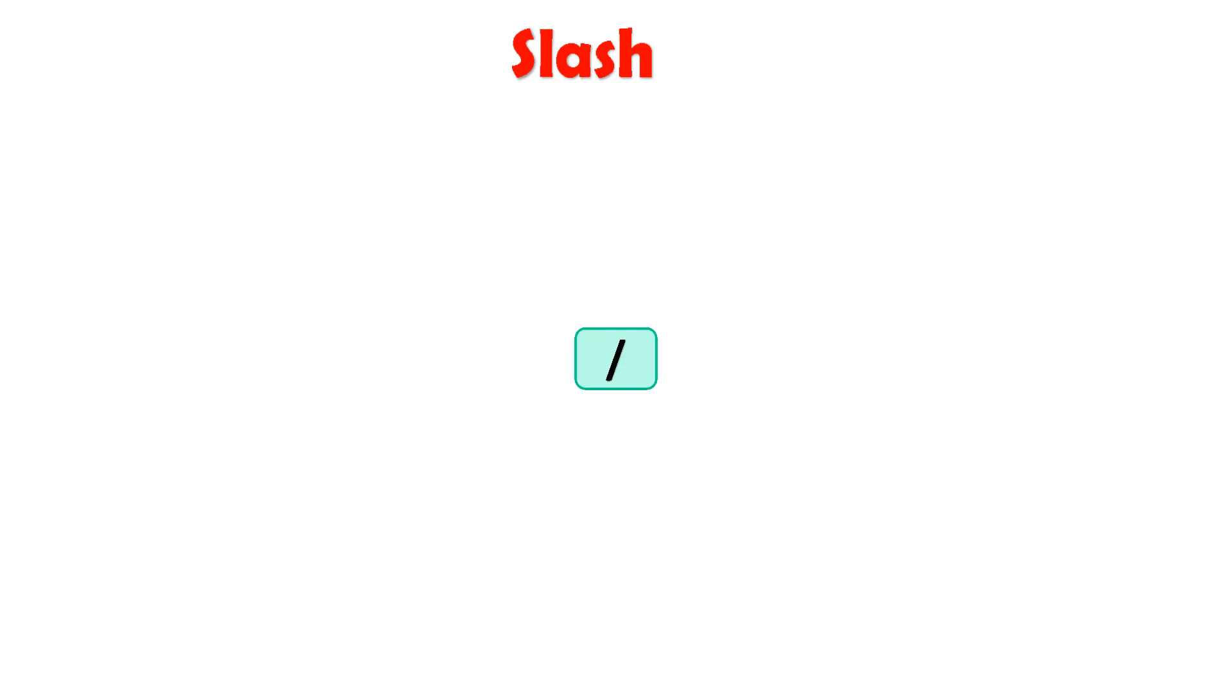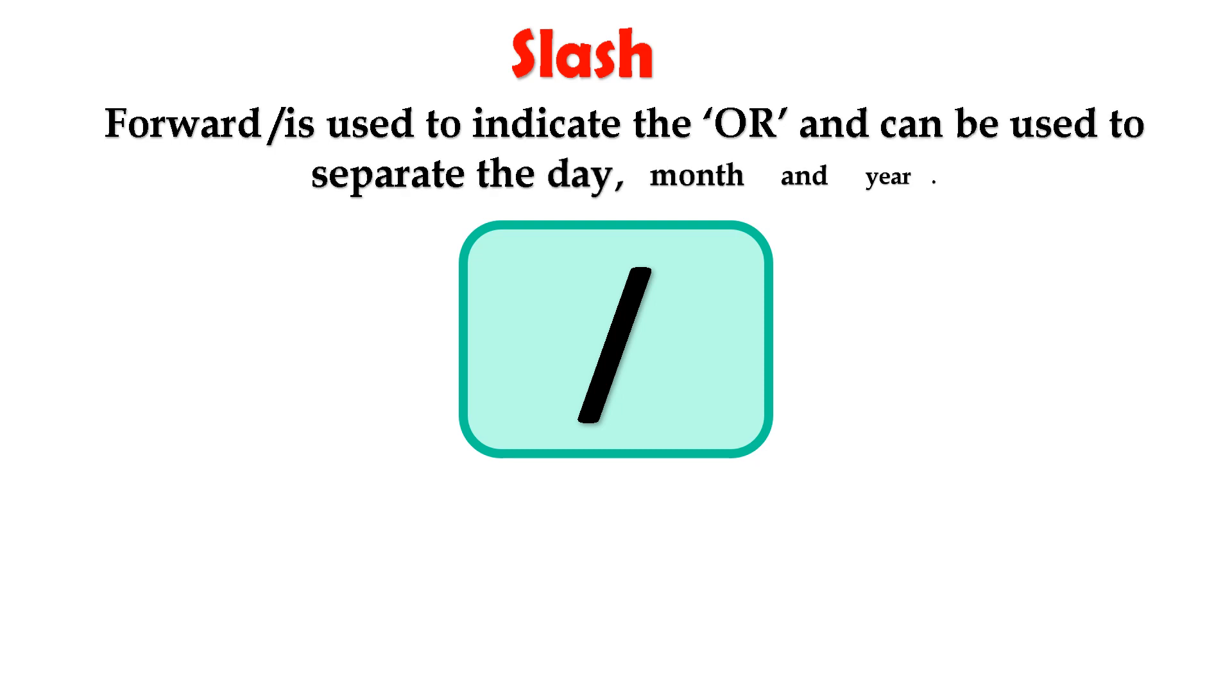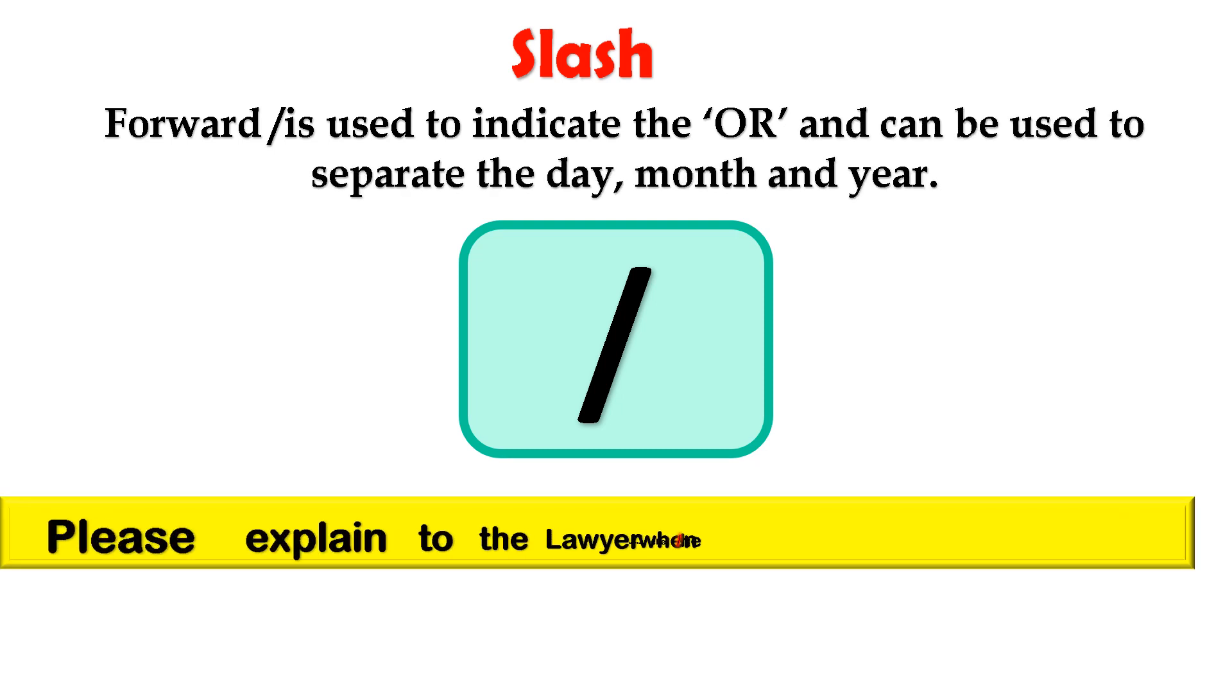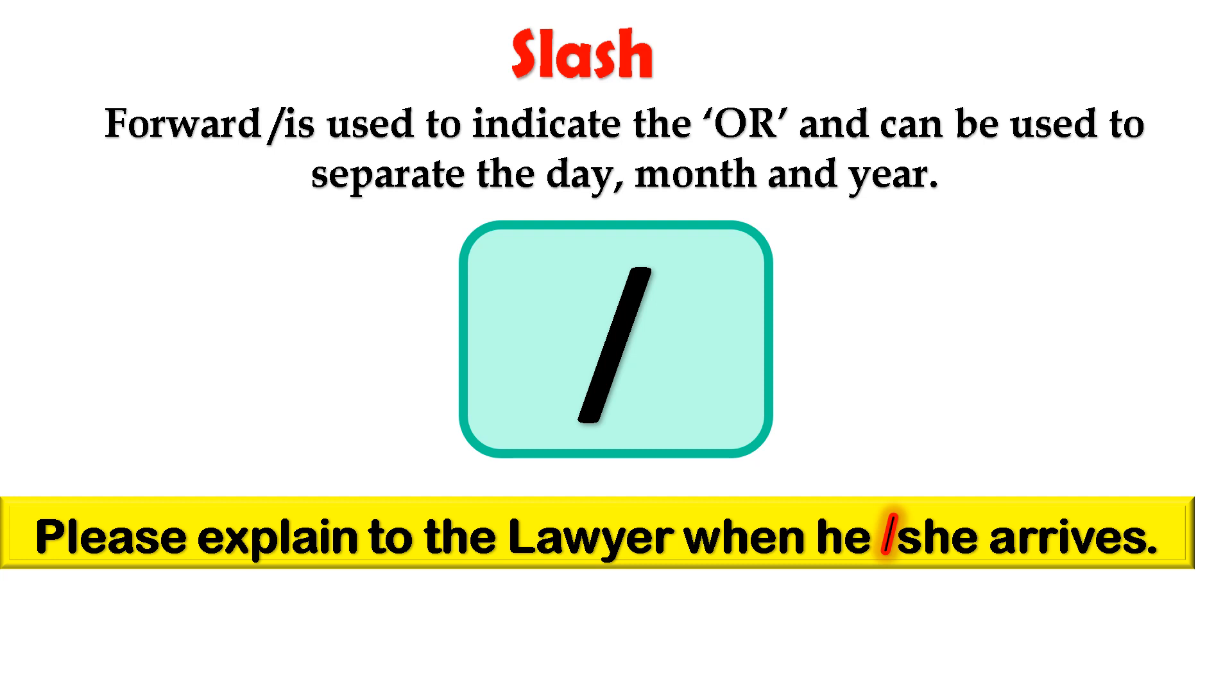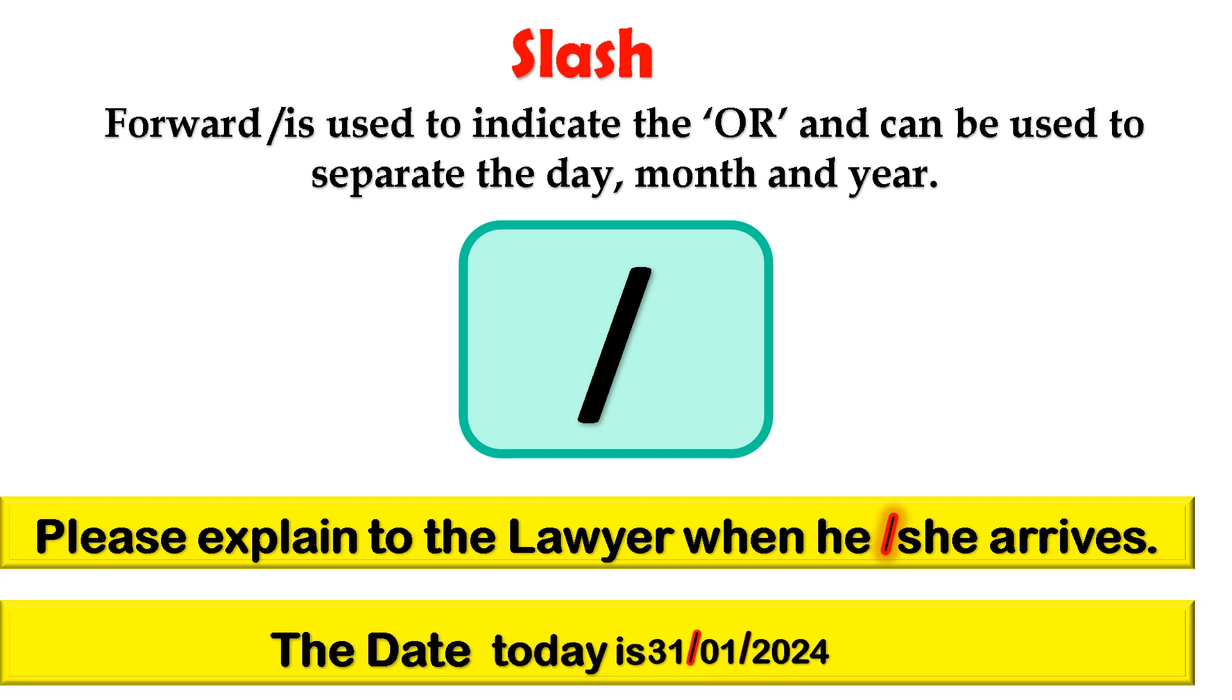Slash. A forward slash is used to indicate the word 'or' and can be used to separate the day, month, and year. For example, please explain to the lawyer when he/she arrives. In this example, the forward slash is used to indicate the word 'or'. The date today is 1/2/2017. In this example, the forward slash is used to separate out the day, month, and year.